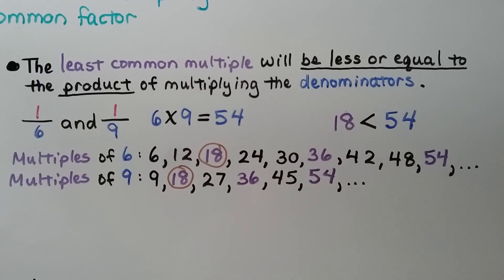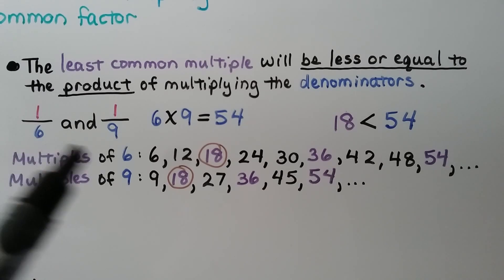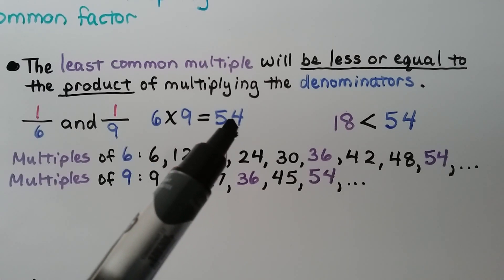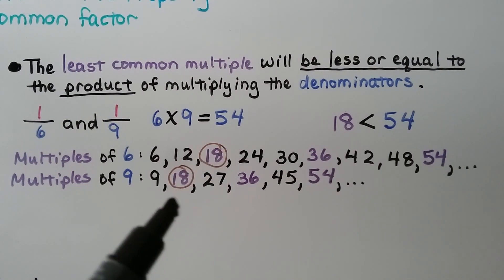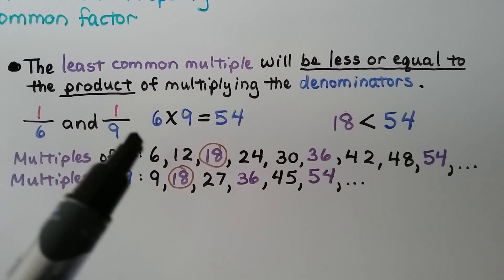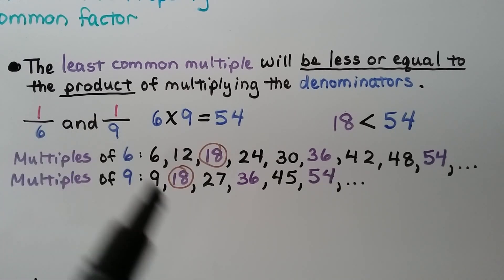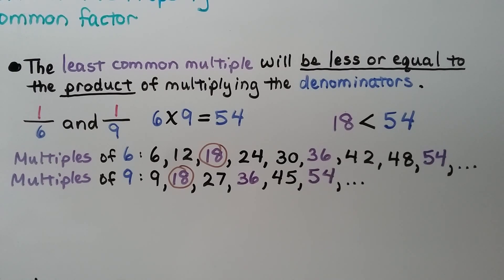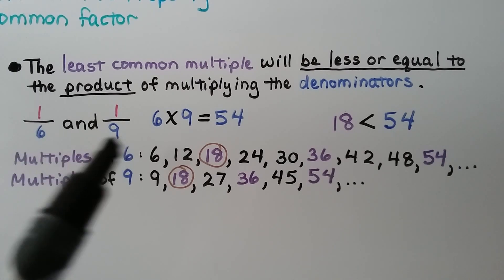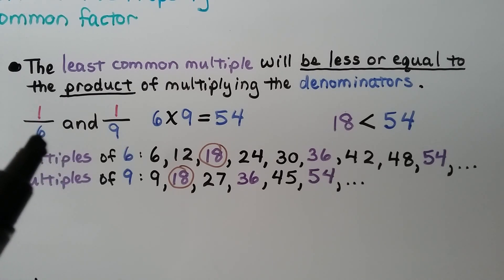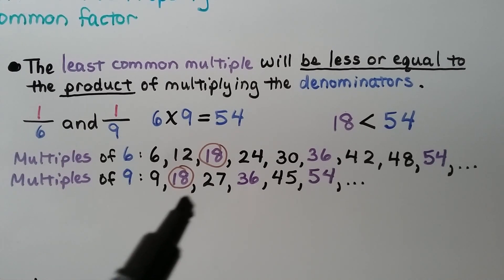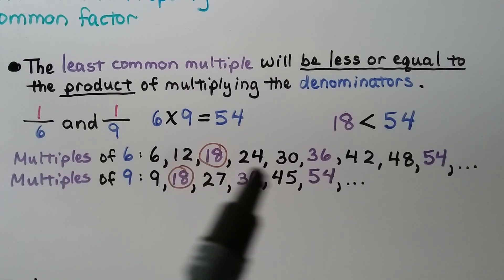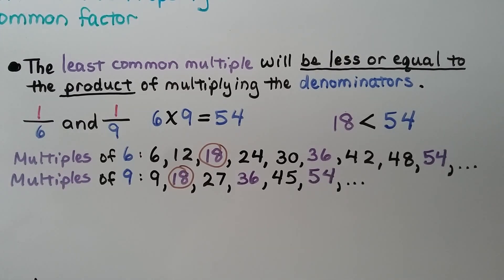The least common multiple will be less than or equal to the product of multiplying the denominators. So if we have 1/6 and 1/9 and we multiply their denominators, we get 54. But that's not the least common multiple — 18 is less than 54. So keep in mind: if you're using multiplication of the denominators to find a common multiple, it may not be the least. To find the least, you might need to list the non-zero multiples of each denominator.